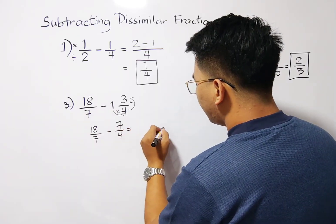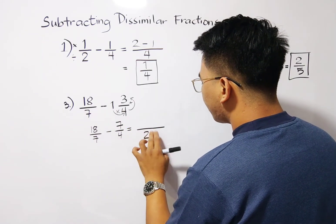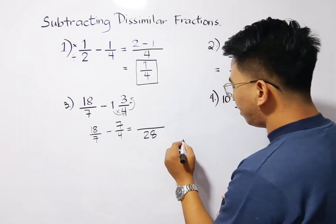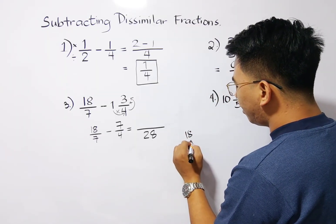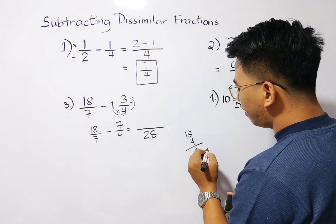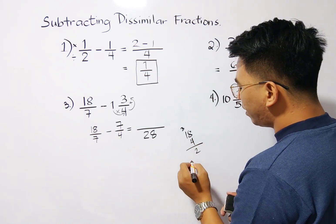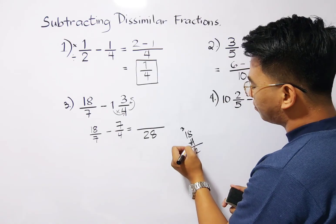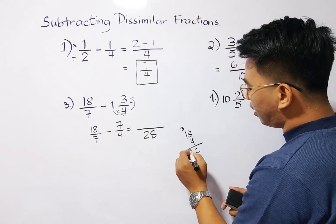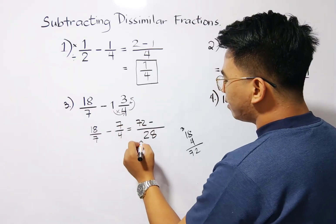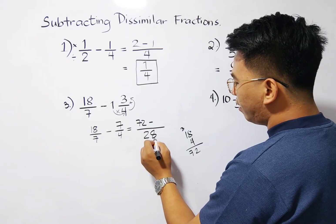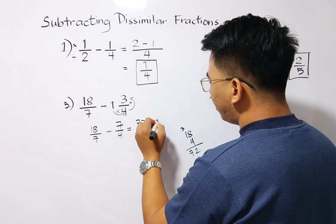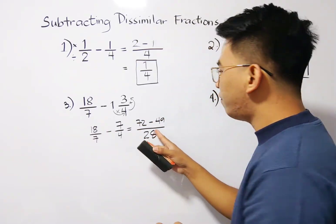So we can simplify this. This is 28. 28 divided by 7 is 4 times 18. So that is 4 times 18. 4 times 18, that is 32, carry 3, 4 times 1, 4 times 1 is 4, which is 4, plus 3, that is 72.